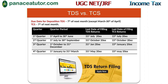For Quarter 4 (1st January to 31st March), you need to be especially attentive. The last date for filing the TDS return is 31st May — not 30th April. The last date for TCS return is 15th May — not 15th April. So in the 4th quarter, the dates are different and this is where questions are often asked.